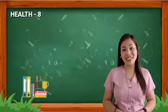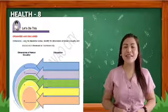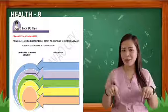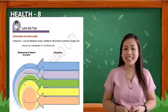This time, challenge yourself to take higher tasks. Our activity is Organize and Discuss. Open your module and follow the instructions using the illustrations below. Identify the dimensions of human sexuality and discuss each dimension in one sentence only.